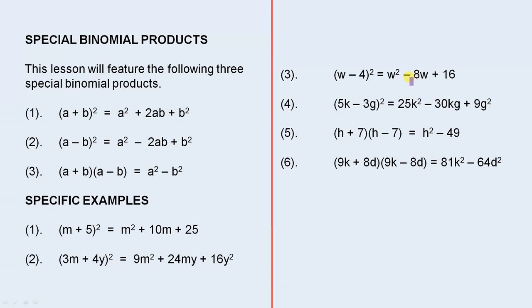For number 3, (w - 4)² is the first term squared which is w². Multiply them together to give you -4w and double the answer, that gives you -8w. And square the second term to give you 16.